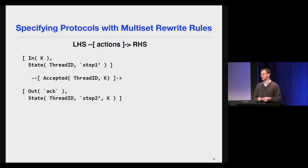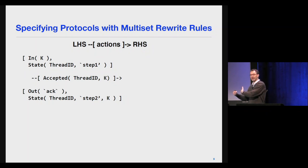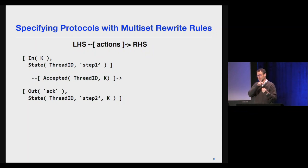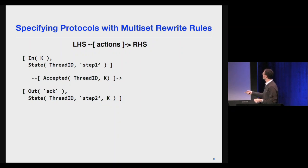In practice, protocols are specified using a language called multi-set rewriting. Multi-set rewriting is like term rewriting, but rather than changing one term to another, you change a multi-set — a bag of facts — into another bag of facts. These bags of facts represent the states of the different protocol participants: what state they're in, what they know, the state of the network including messages sent and received, and what the adversary knows.